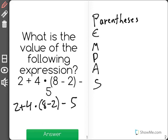So here I see 8 minus 2 is in parentheses. So that's going to equal 6. So now we have 2 plus 4 times 6 minus 5.